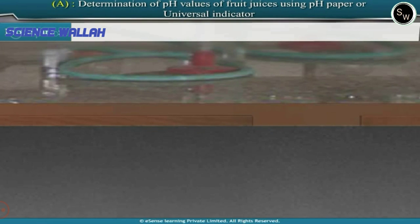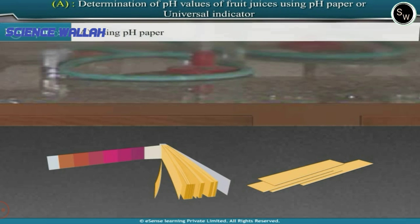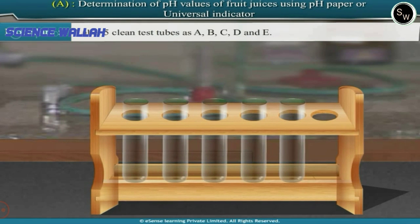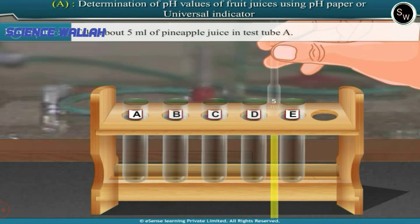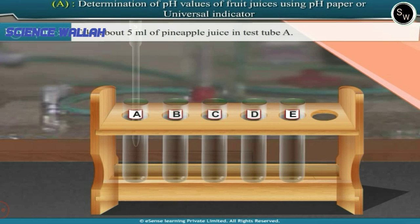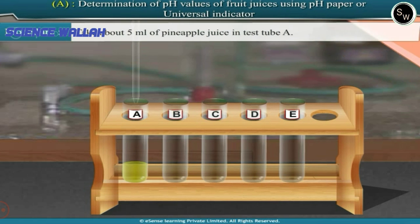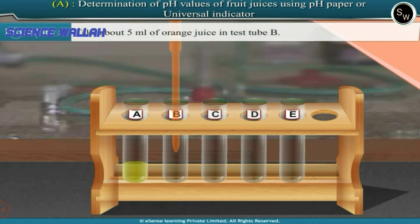Let us perform the experiment. Part A: Using pH paper. Label five clean test tubes as A, B, C, D, and E. Take about 5 ml of pineapple juice in test tube A. Take about 5 ml of orange juice in test tube B.